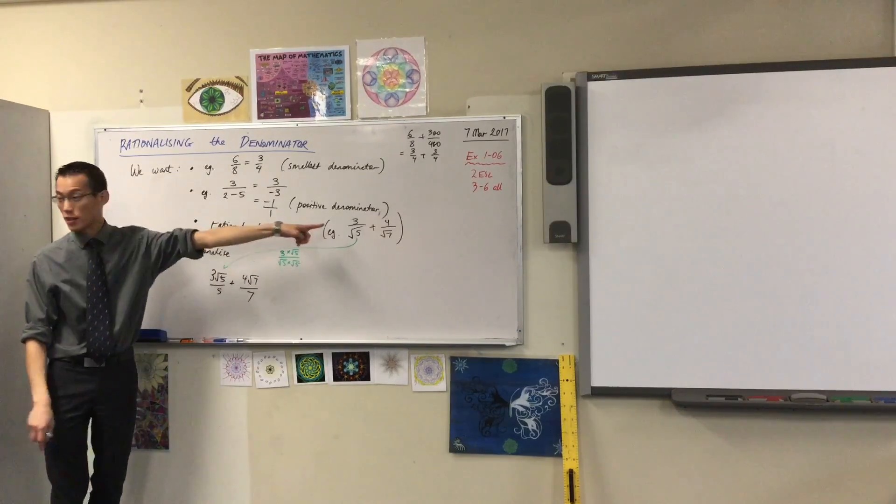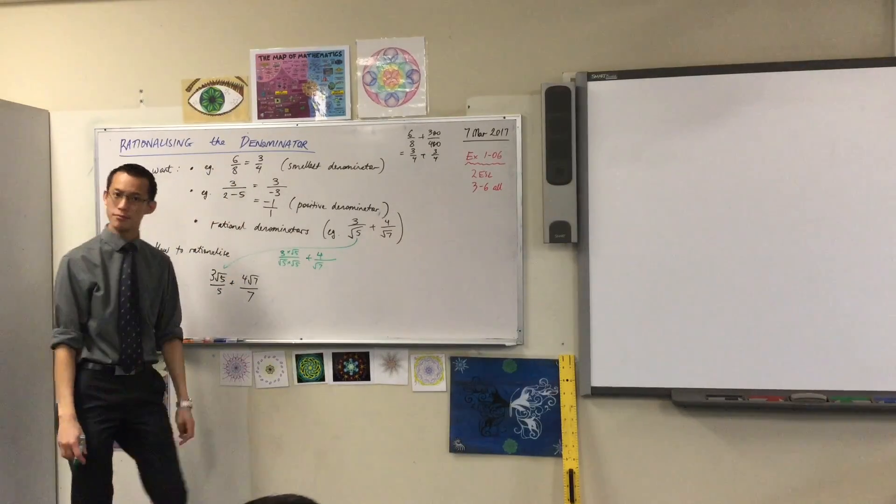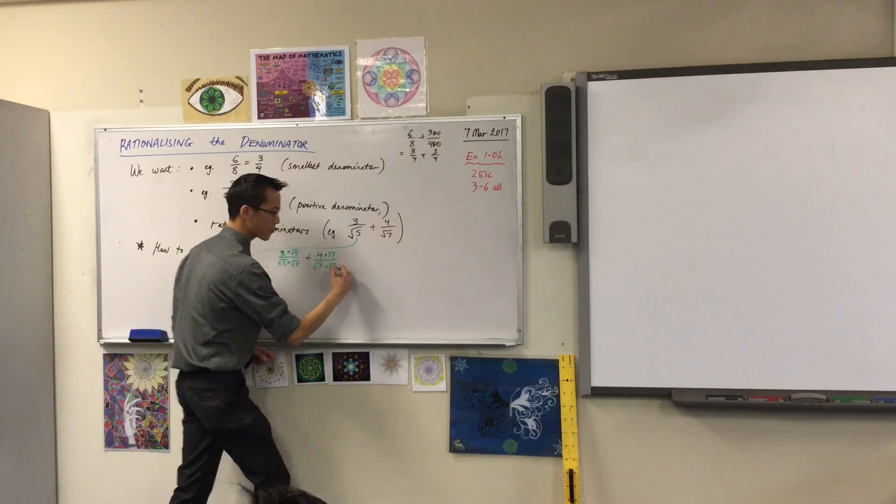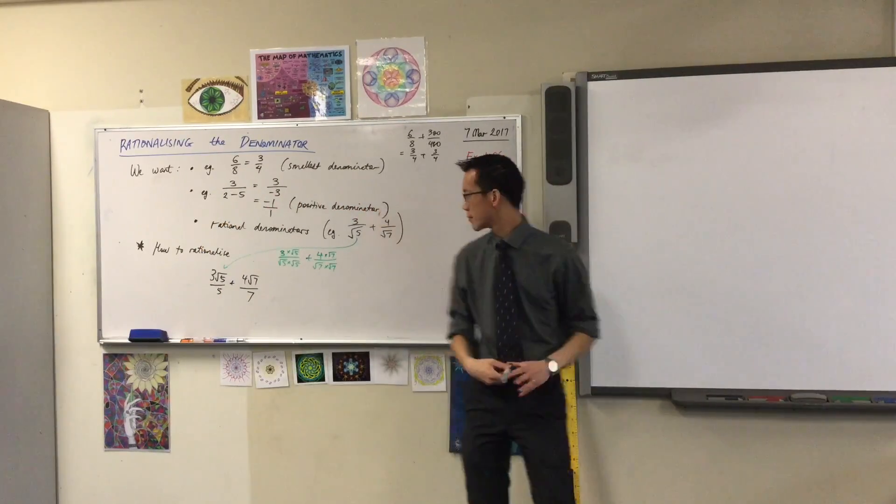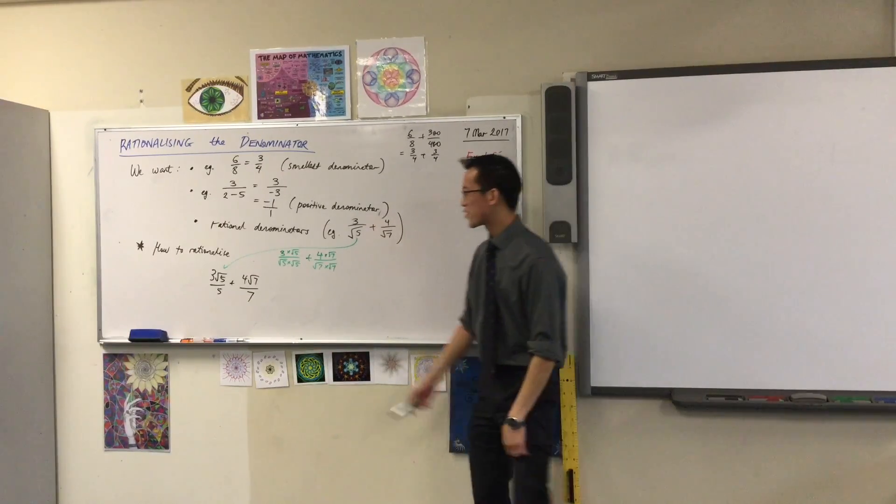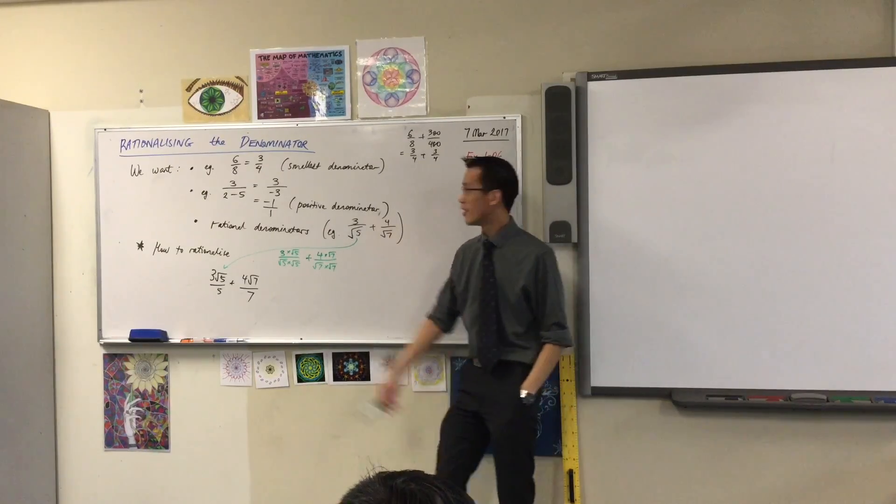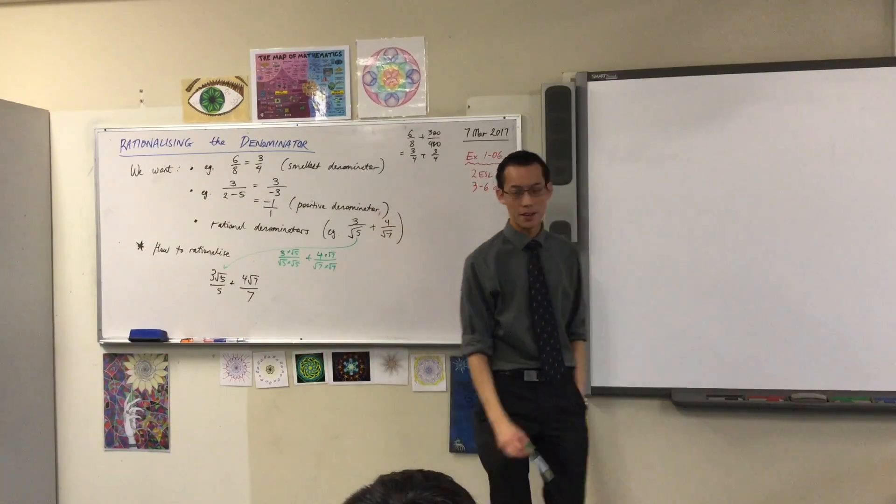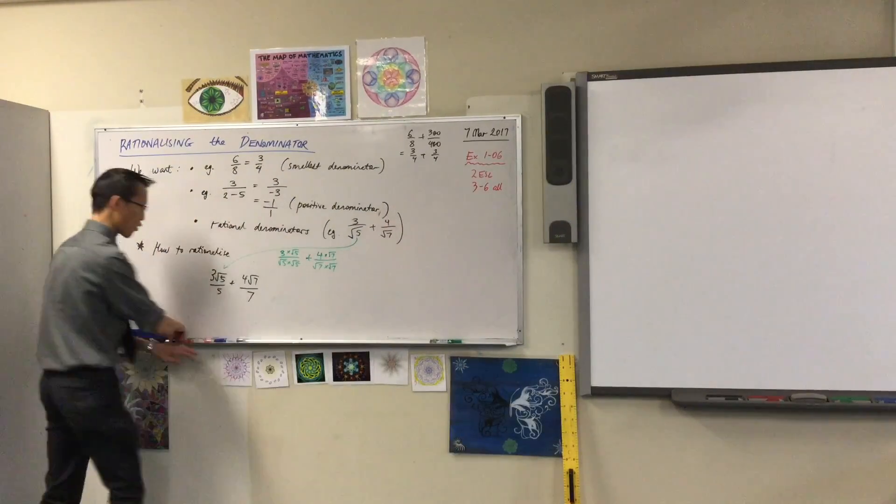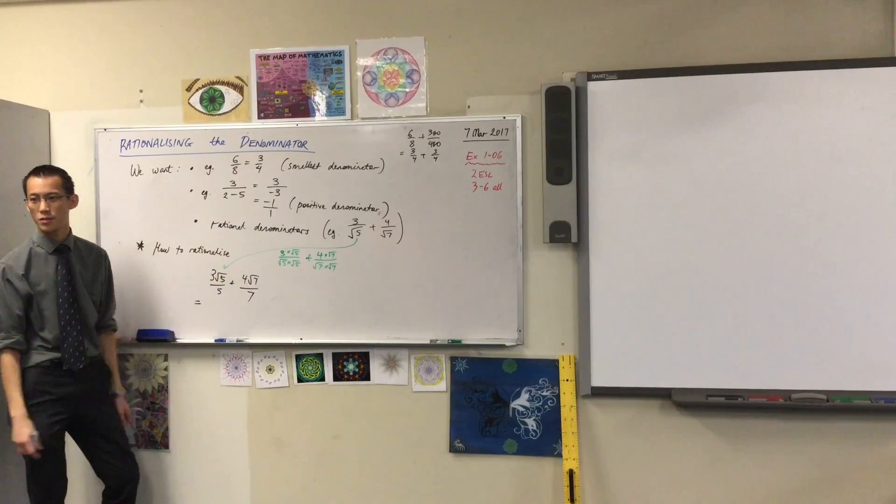So I did that to the first number. I did the same thing to the second one. It used to be 4 over root 7, so I multiply the top and the bottom by root 7. Which leads me to this line. So what I have done is I've changed the denominators so that they're not irrational anymore. They're rational now, which is why it's called rationalizing the denominators. You could potentially, if you wanted to, from here you could now add these. What common denominator would you choose for these two fractions? 35. You'd choose 35, right?